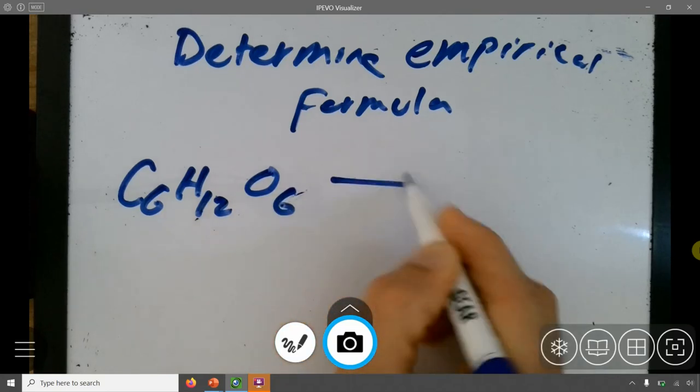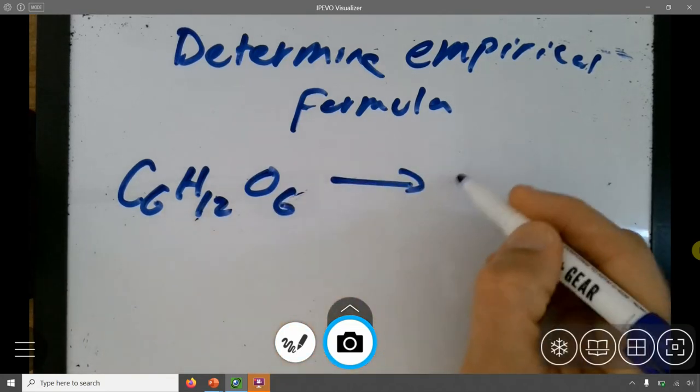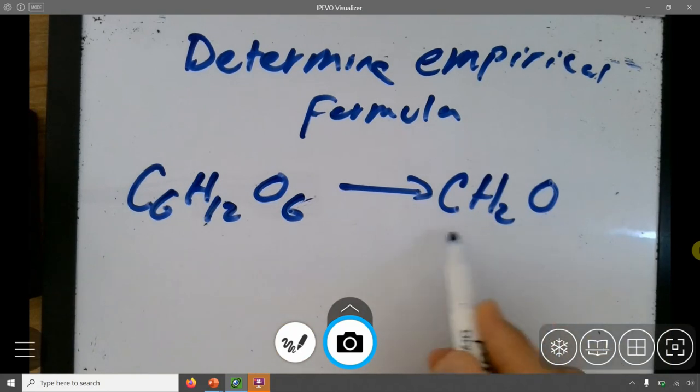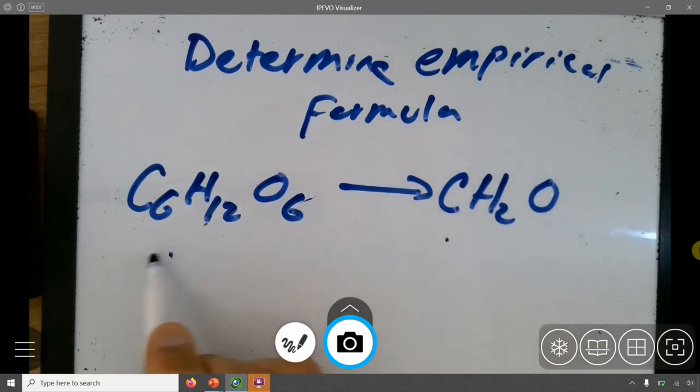The empirical formula for this - you divide everything by 6 - would be CH2O. It's the smallest ratio of the elements. This is the empirical formula, this is the molecular formula.